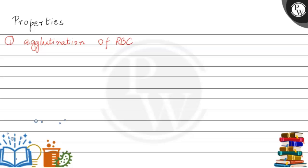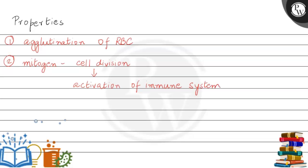Second, Con Canavalin A is a type of mitogen, which means that it induces cell division. Therefore, it plays a very important role in the activation of the immune system. Con Canavalin A activates the immune system by acting as a mitogen and causes proliferation of T cells — it will cause excessive division of T cells which helps in the activation of the immune system.